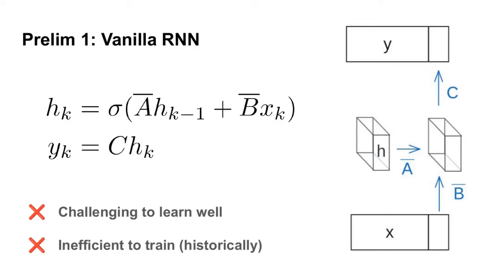You might remember that people stopped using these models in NLP because they were thought to be both challenging to learn well and also inefficient to train historically. With the advent of transformers, people mostly moved away from this class of model.